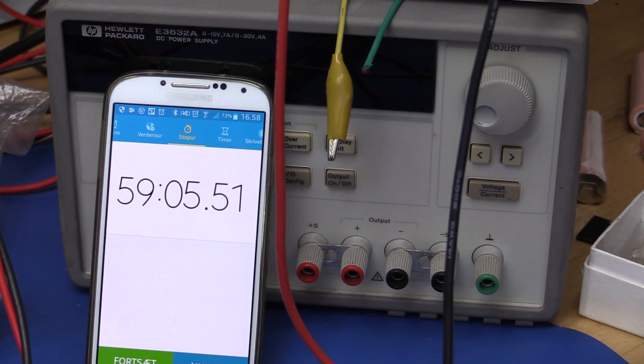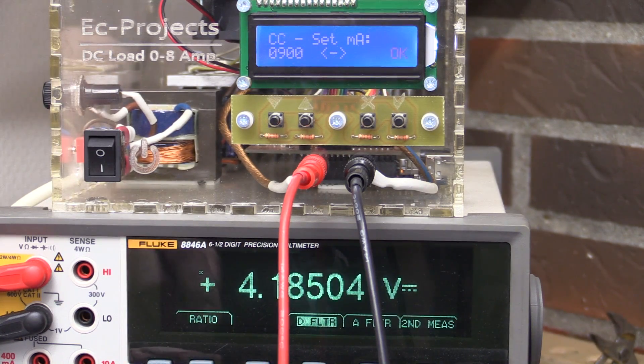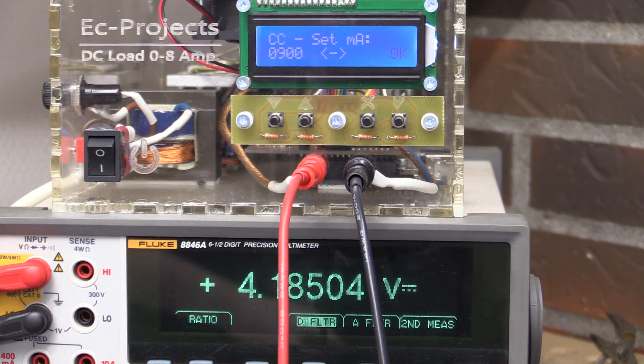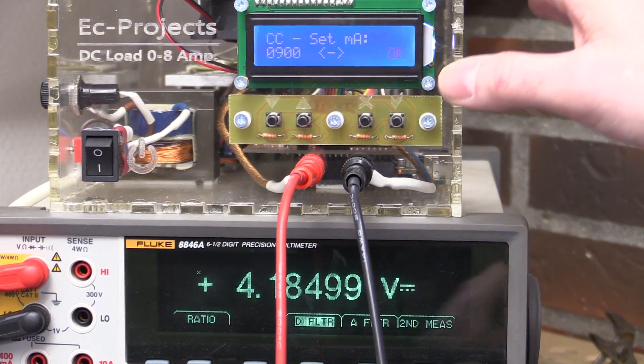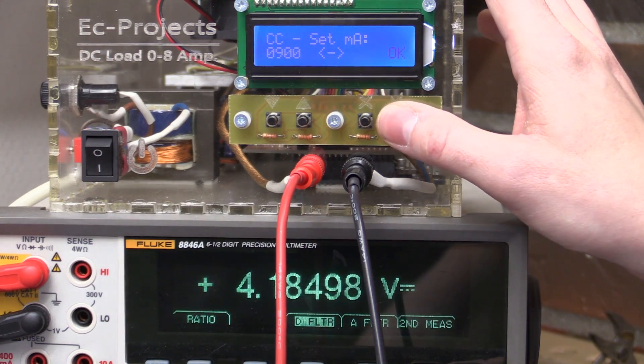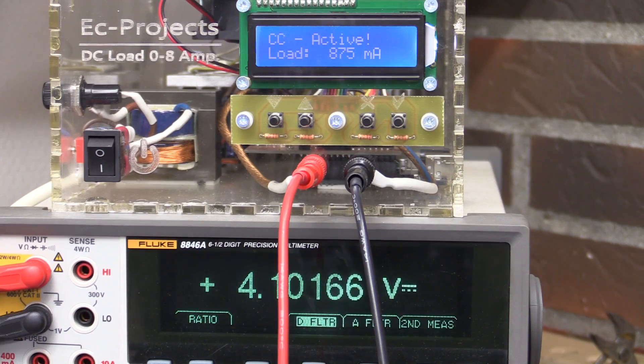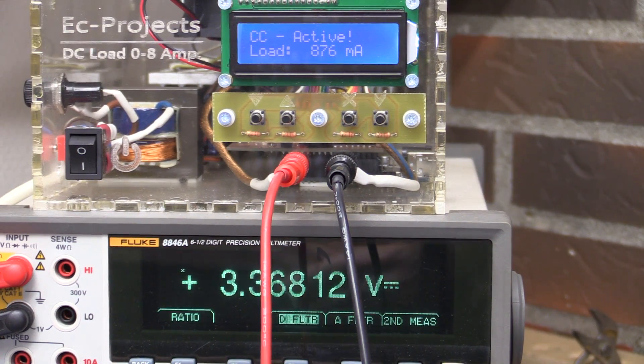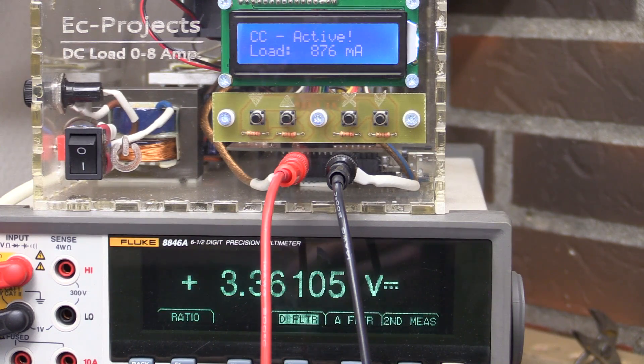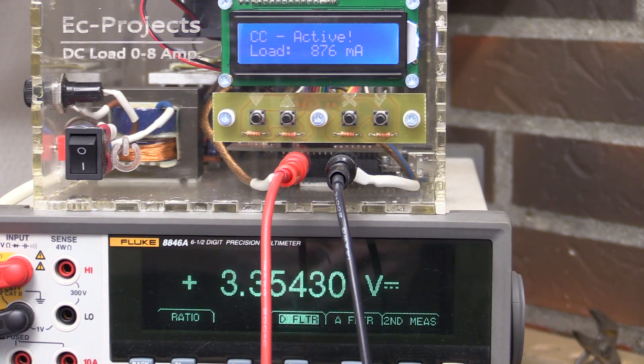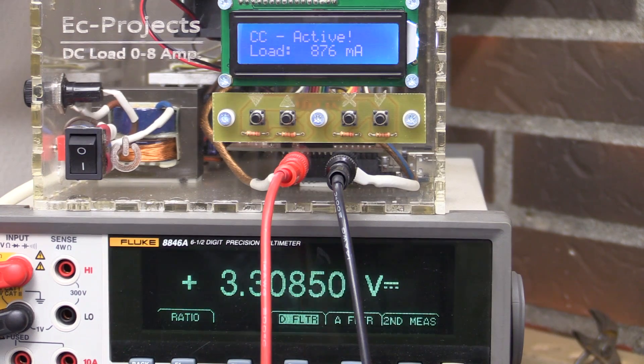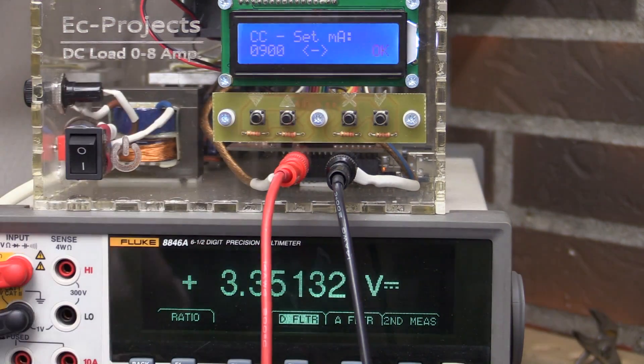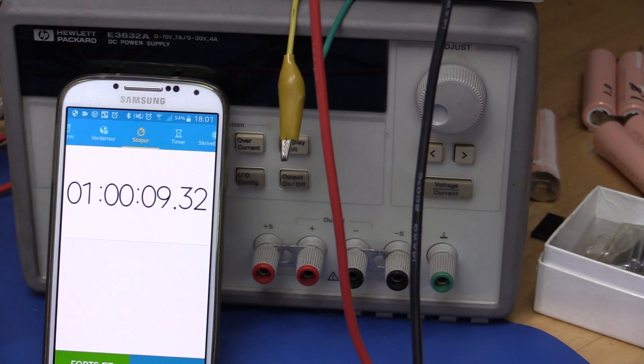So the stopwatch is at 59 minutes and it is very close to the claimed 900 milliamps. So now let's test the other one. It looks like the other battery has dropped a little bit further. Now we are at 4.185 volts. But it is still pretty normal I think. So let's start it. And now we just have to wait another hour, hopefully. And the second battery is almost discharged. This one is going to be very very close to 900 milliamps. And stop.